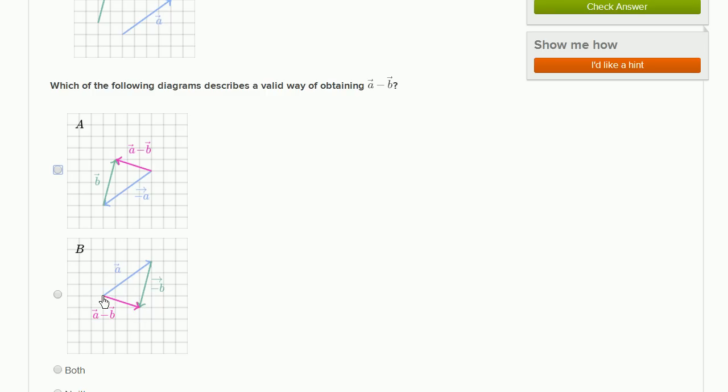And then, if we take the tail of where we started to the head of where we ended, yes, this would be vector a plus negative vector b, which is the same thing as vector a minus vector b. So that one is right. That's a valid way of obtaining vector a minus vector b.